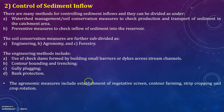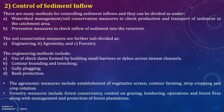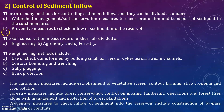Agronomy measures include establishment of vegetative screens, contour farming, strip cropping, and crop rotation. Forestry measures include forest conservancy, control on grazing, lumbering operations and forest fires, along with management and protection of forest plantations. Preventive measures to check inflow of sediment into the reservoir include construction of bypass channels or conduits.